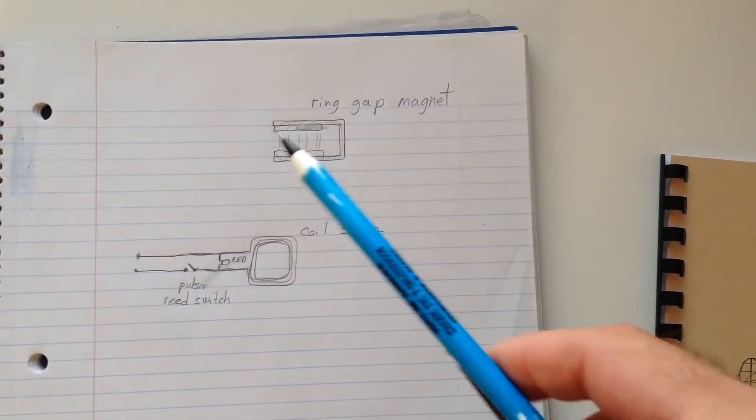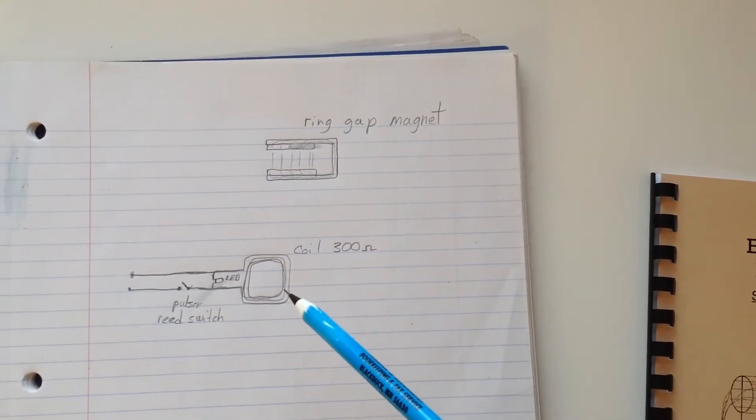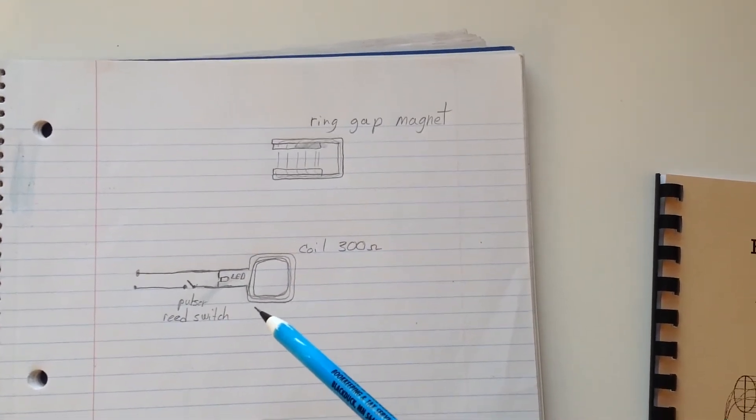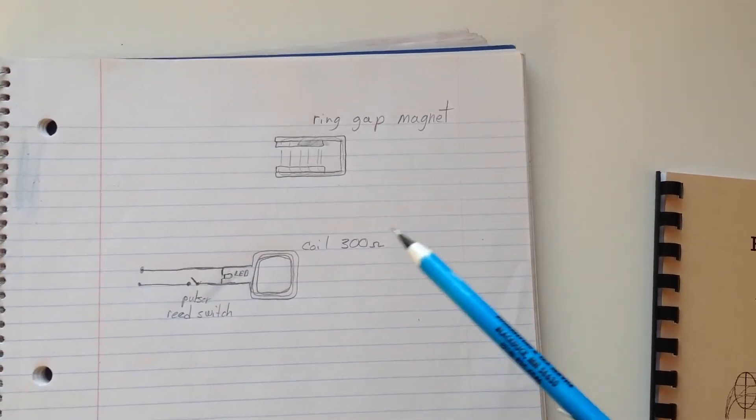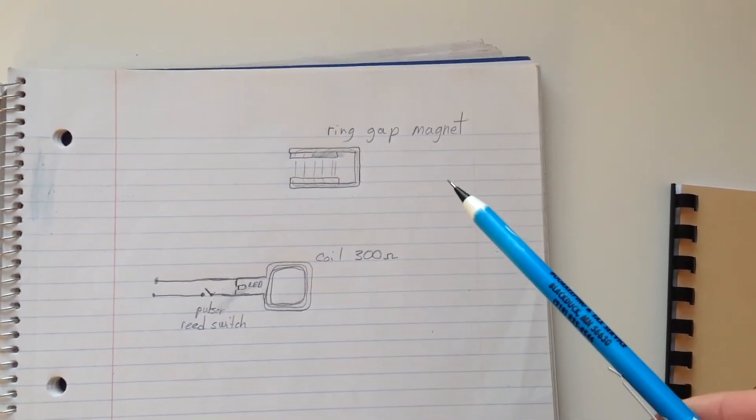This is a circuit diagram. This coil is made up of 40 gauge magnetic wire. I don't know how many turns it was, but it ended up being 300 ohms.